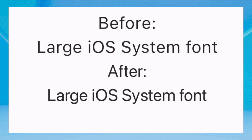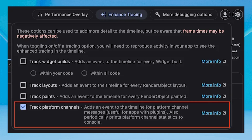Flutter text now looks a little more compact and more native on iOS. According to Apple design guidelines, smaller fonts on iOS should be more spread out to be easier to read on mobile, while larger fonts should be more compact to not take up as much space. Before, Flutter was incorrectly using the smaller, more spread-out font in all cases, but now by default Flutter will use the compact font for larger text.